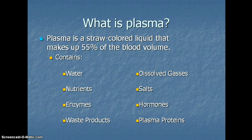Plasma is a straw-colored liquid, a yellow liquid, that makes up 55% of blood volume. Plasma contains many important things, including water, nutrients, enzymes, waste products, dissolved gases, salts, hormones, and plasma proteins.